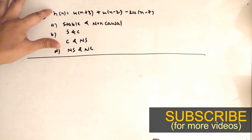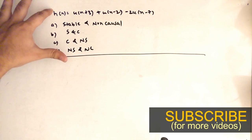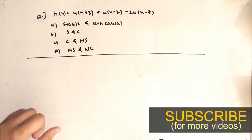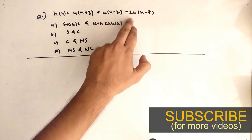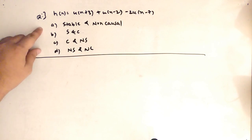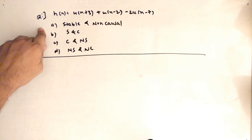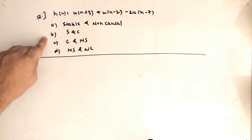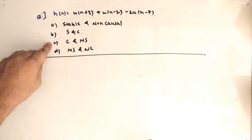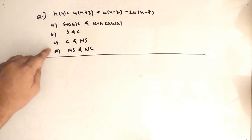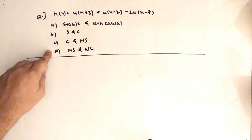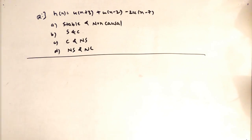The GATE question is: h[n] = u[n+3] + u[n-2] - 2·u[n-7]. Determine whether (a) it is stable and non-causal, (b) stable and causal, (c) causal and not stable, or (d) not stable and non-causal.